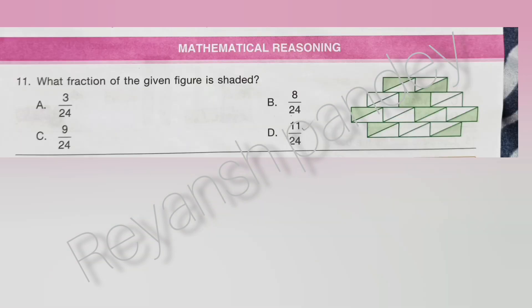What fraction of the given figure is shaded? The total number of equal parts is 24. The number of shaded parts is 9. So the answer is 9 by 24. Answer is C.